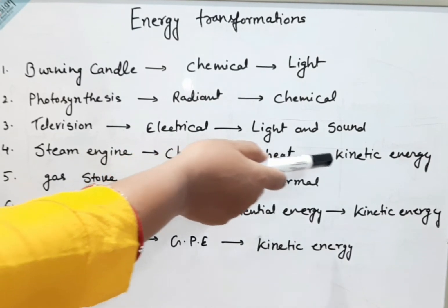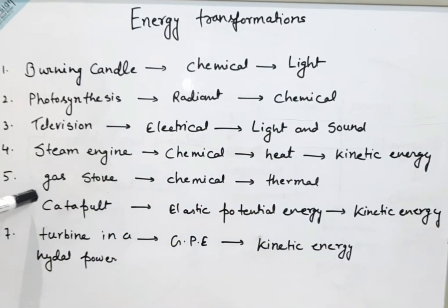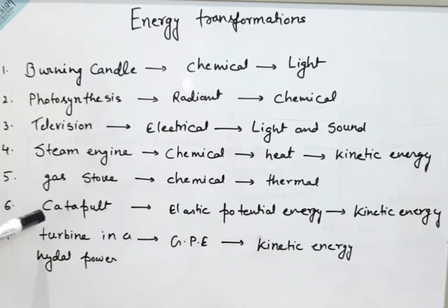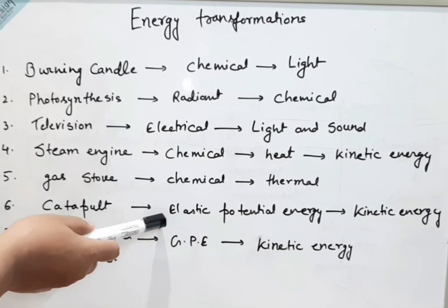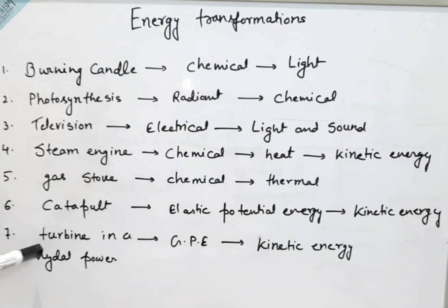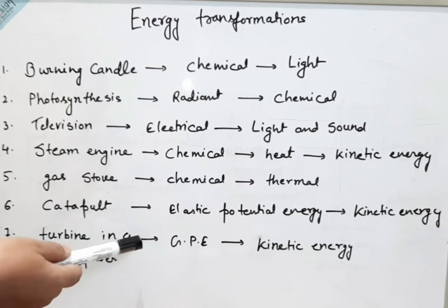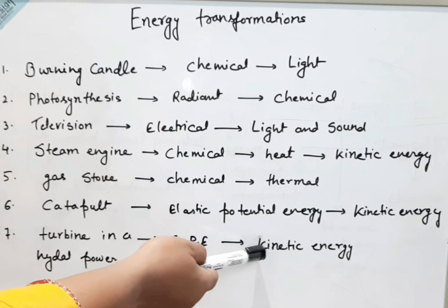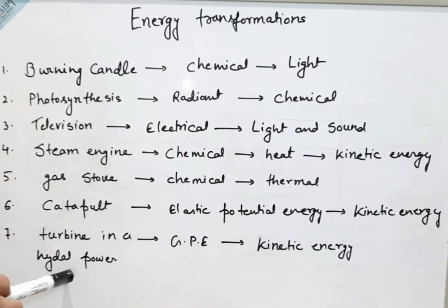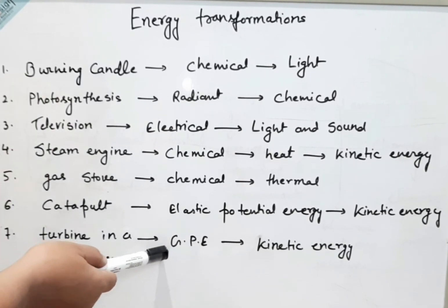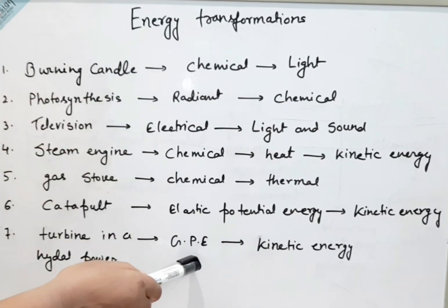In a steam engine, chemical energy of the coal gets converted into heat, which then leads to kinetic energy. In a gas stove, chemical energy of the fuel gets converted into thermal energy. In a catapult, elastic potential energy — when we stretch it — gets converted into kinetic energy. And in the turbine of a hydroelectric power plant, gravitational potential energy gets converted into kinetic energy, because we store water at a height, and when that water falls on the turbine it changes into kinetic energy.